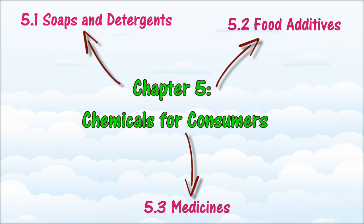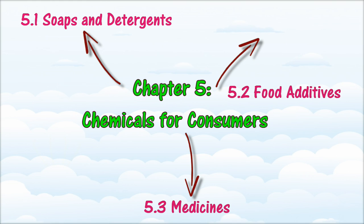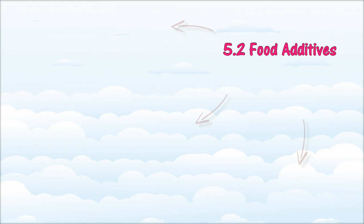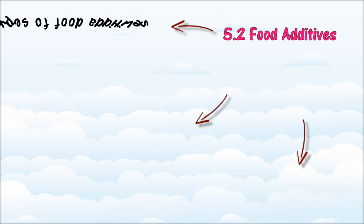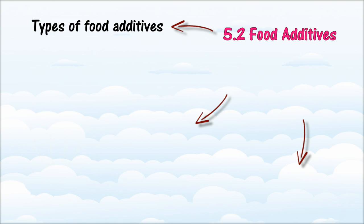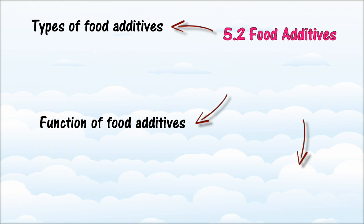In Section 5.2, we will learn about food additives. At the end of this section, you should be able to: state the types of food additives and their examples; state the functions of each type of food additive; justify the use of food additives; and describe the effects of food additives on health and the environment.